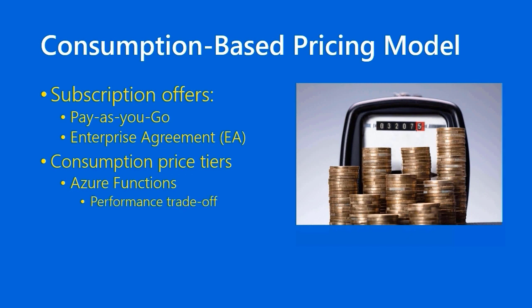That having been said, when you're doing consumption, especially free consumption price tiering, there can be a performance trade-off. For example, Azure Functions using the consumption pricing model function much more slowly than when you're using the app service plan, where you're, in effect, pre-paying for a certain amount of compute per pay period.